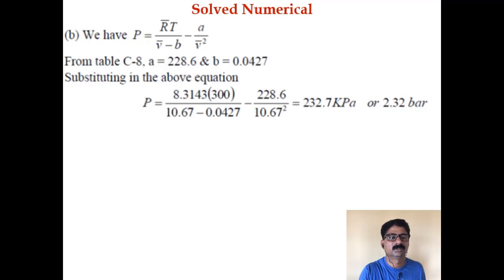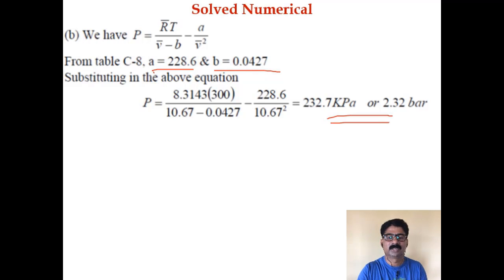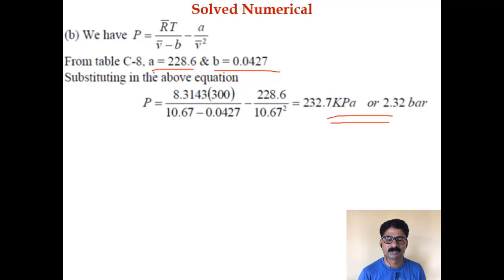Using the van der Waals equation P = R̄T/(V̄ − B) − A/V̄², constants A = 228.6 and B = 0.0427 are taken directly from table C8, giving P = 2.32 bar. With this, lecture number 13 is concluded, and a few more problems will be solved in the next lecture.